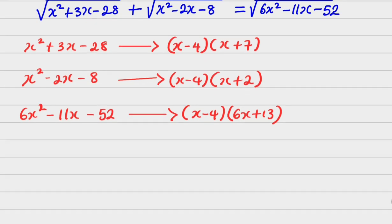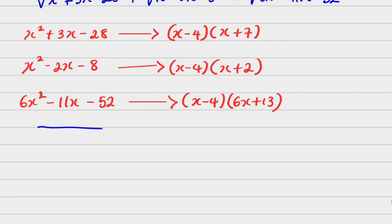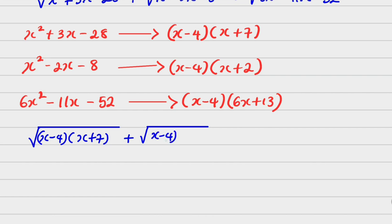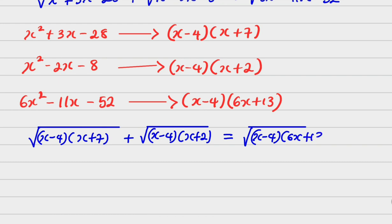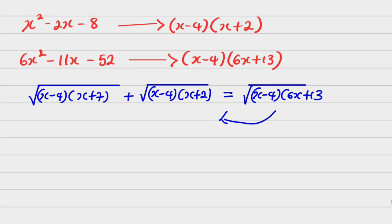Replacing it means that I'm going to have: square root of (x minus 4)(x plus 7), plus square root of (x minus 4)(x plus 2), equals square root of (x minus 4)(6x plus 13).